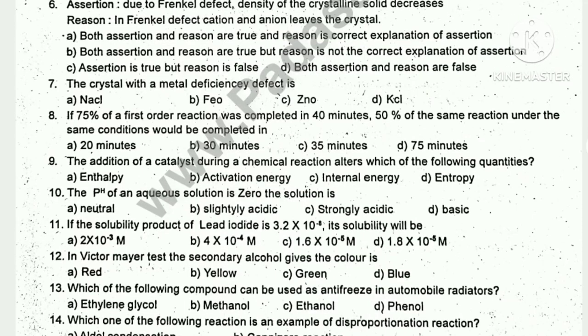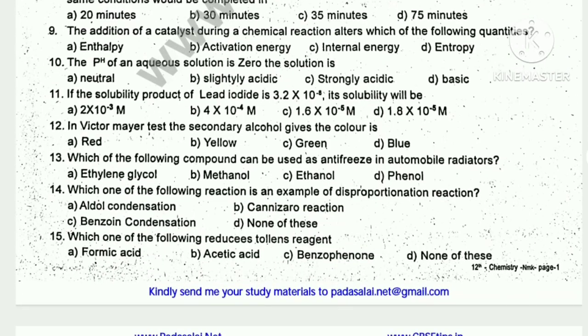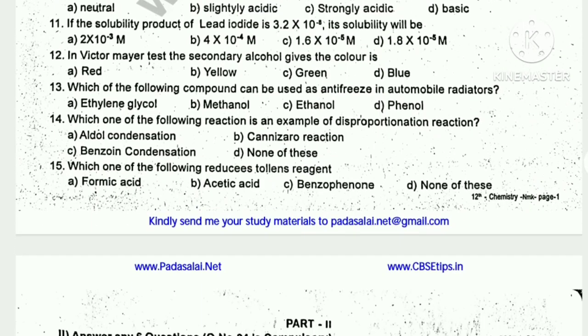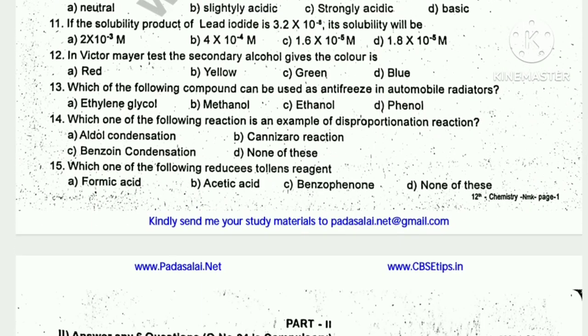The pH of an aqueous solution is 0 — the solution is? In the secondary alcohol gives the color is 50. Which one of the following reduces Tollens reagent?